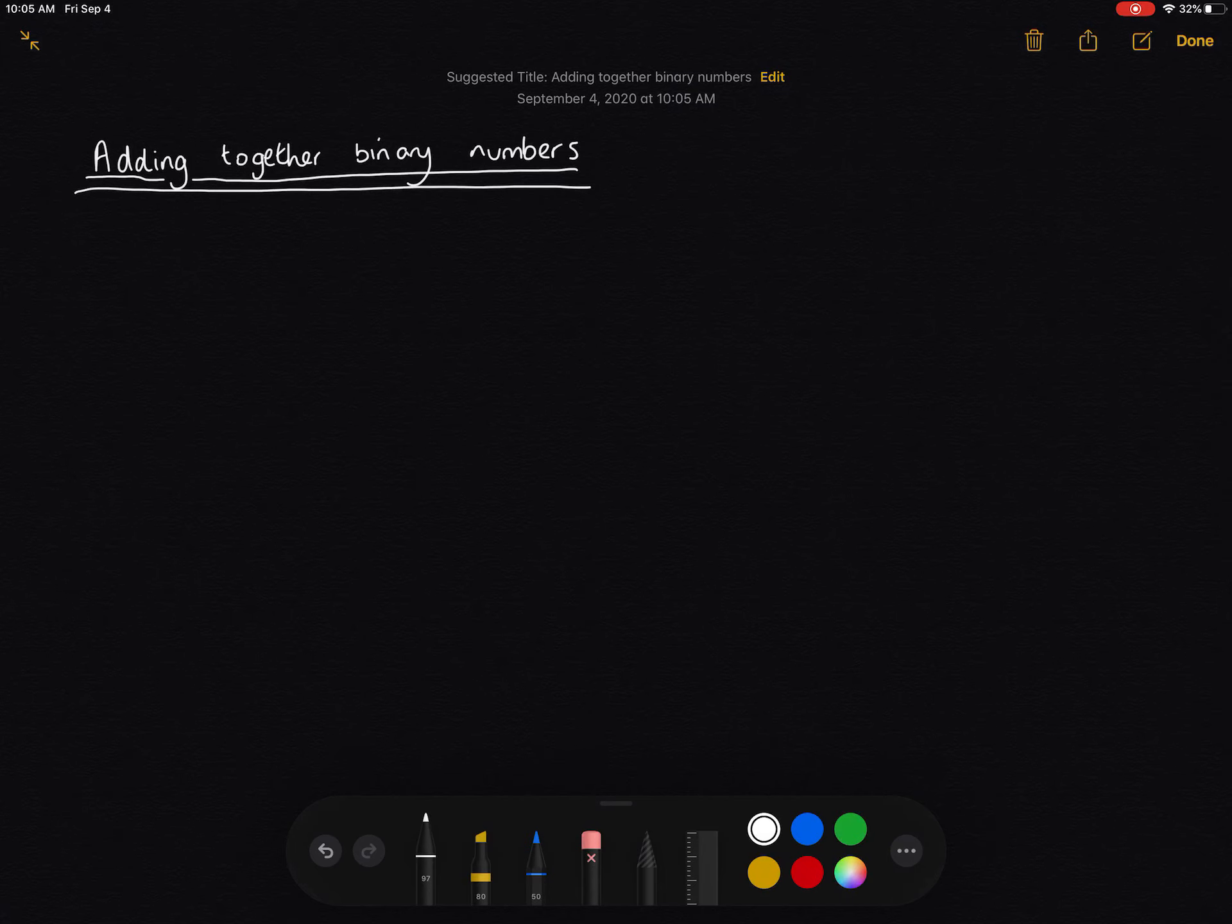Okay, I'm going to very quickly take you through how to add together binary numbers. Okay, so I'm going to have, I've got a sum, I've got 101 plus 11.